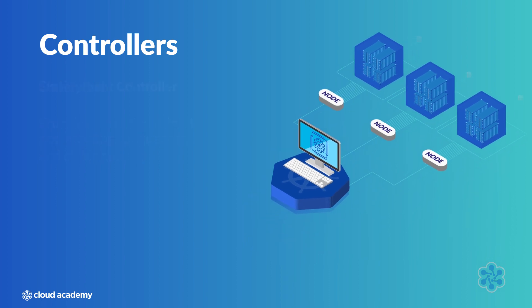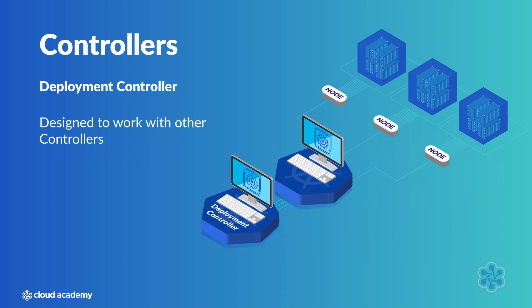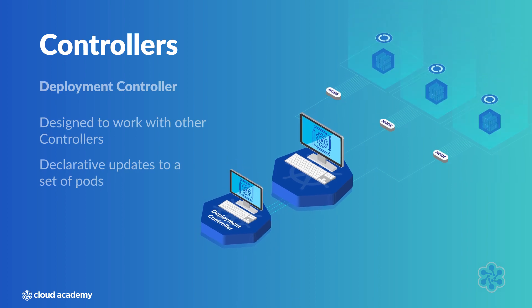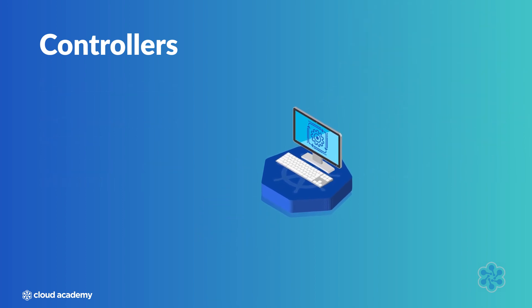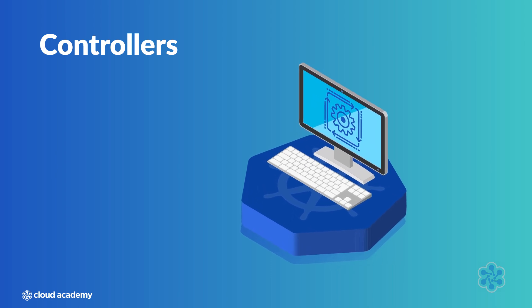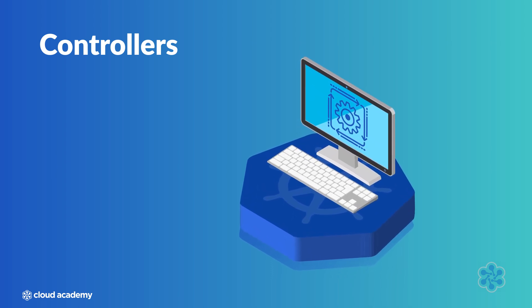Finally, there's the deployment controller, designed to work with other controllers such as replica sets. The deployment controller, as the name implies, is designed for declarative updates to a set of pods. It handles transitioning a set of pods from its current state to a defined desired state. There's more we could add about controllers, but this is enough to get the basic idea. Don't hesitate to dig through the Kubernetes documentation for more details about each specific controller if you're interested.